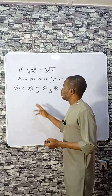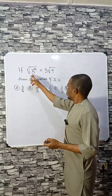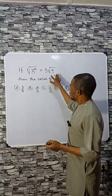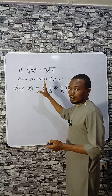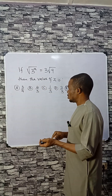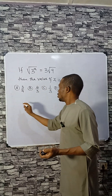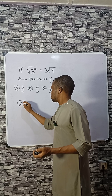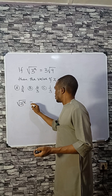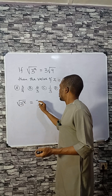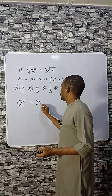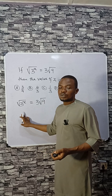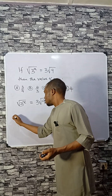Given that root 3 raised to the power x equals 3 root 9, find the value of x. Copy this out — this equals 3 root 9. What you need to do is check the square of both sides.